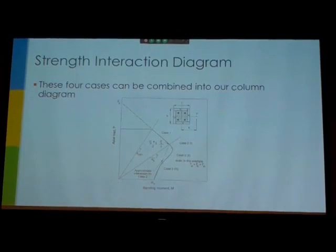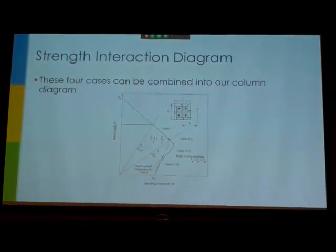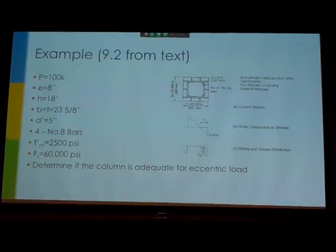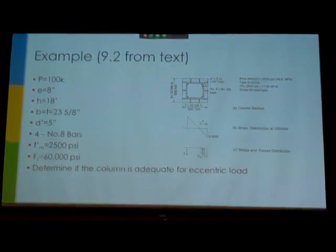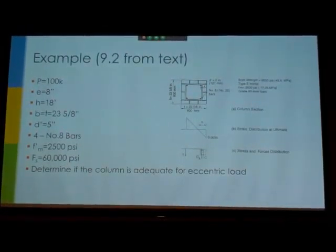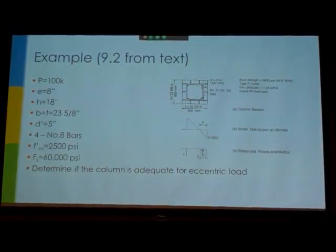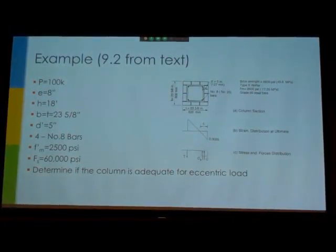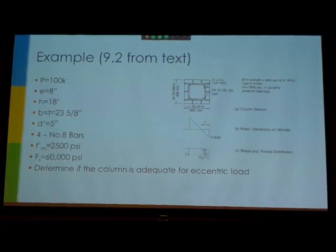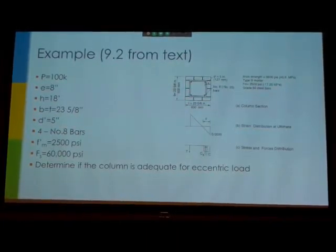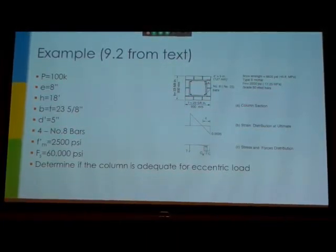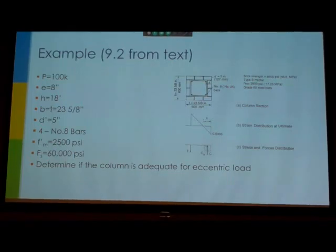And so if you're drawing this for a column, you can go through all four of these cases, calculate your values, draw this up. I'm going to run through an example before I'm finished. This is from the textbook. Once again, I'm just going to walk step by step, sort of explain what they do, because sometimes it doesn't explain most clearly. But basically we're going to take this masonry column and we're just going to analyze if it's okay for the loads that are put on it.